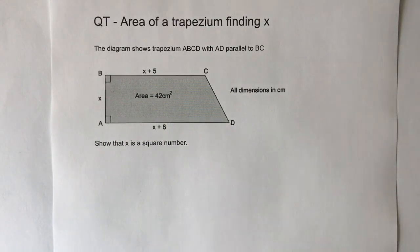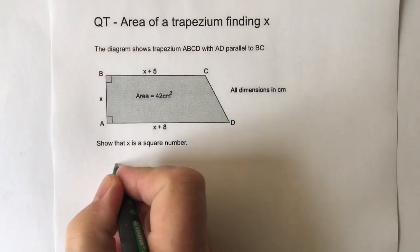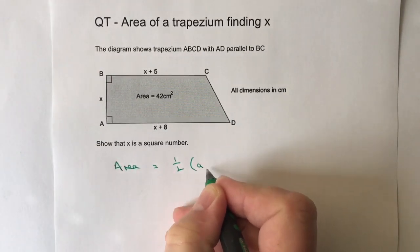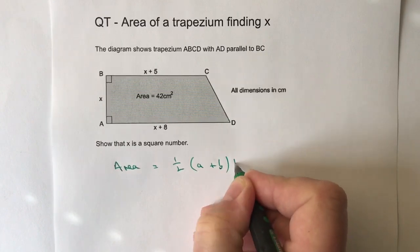So there's a couple of ways in which we can do this. The way I think would be better is perhaps to actually use the formula for the area of a trapezium.